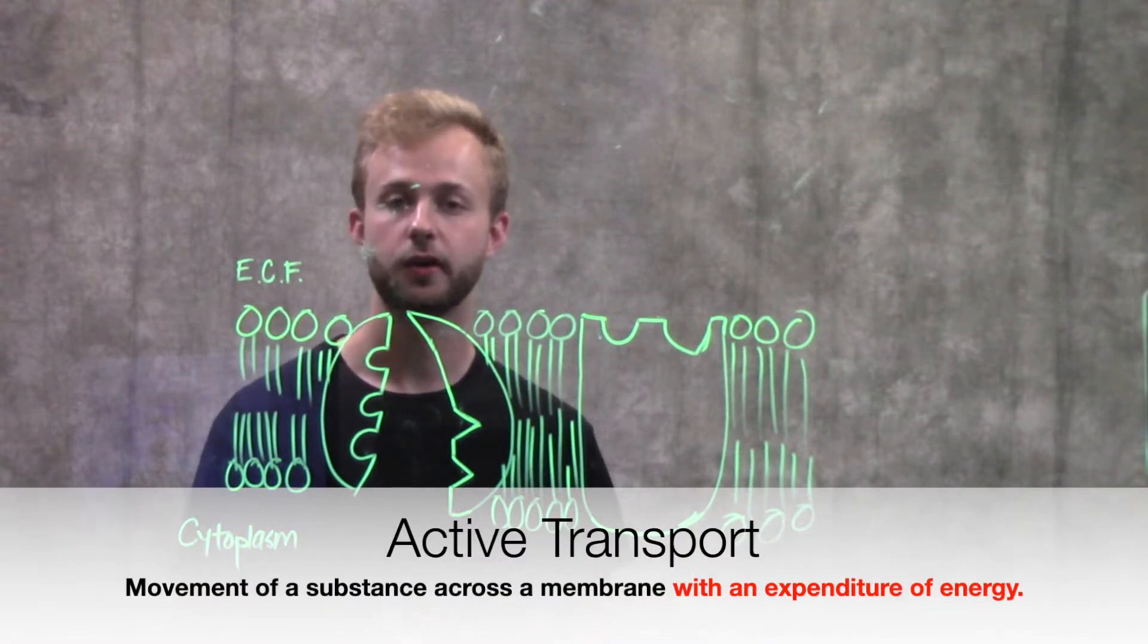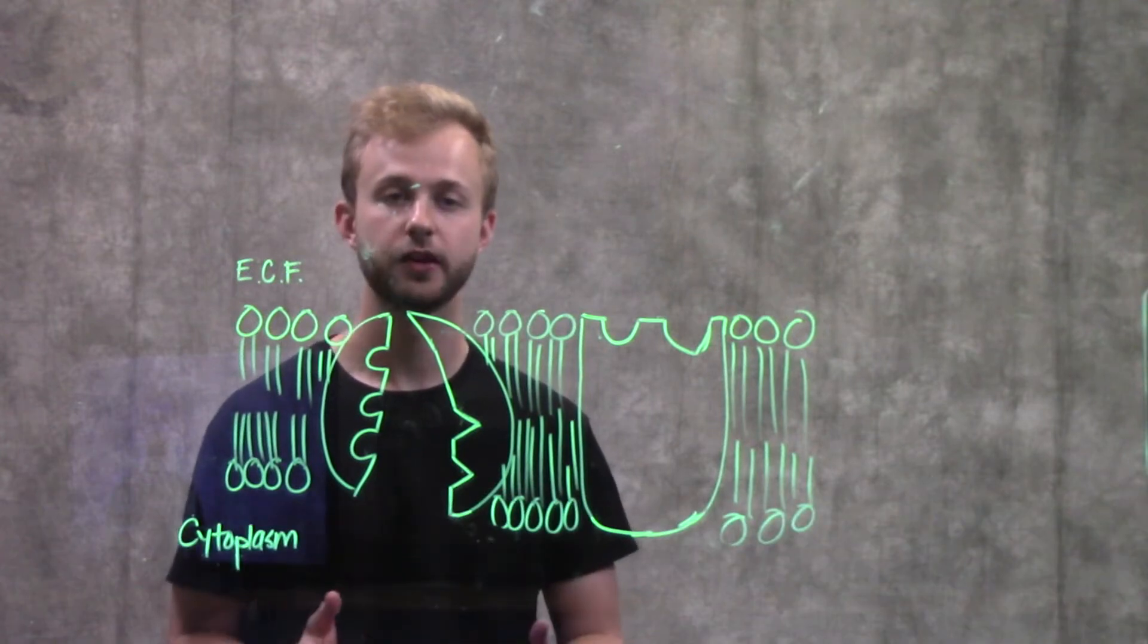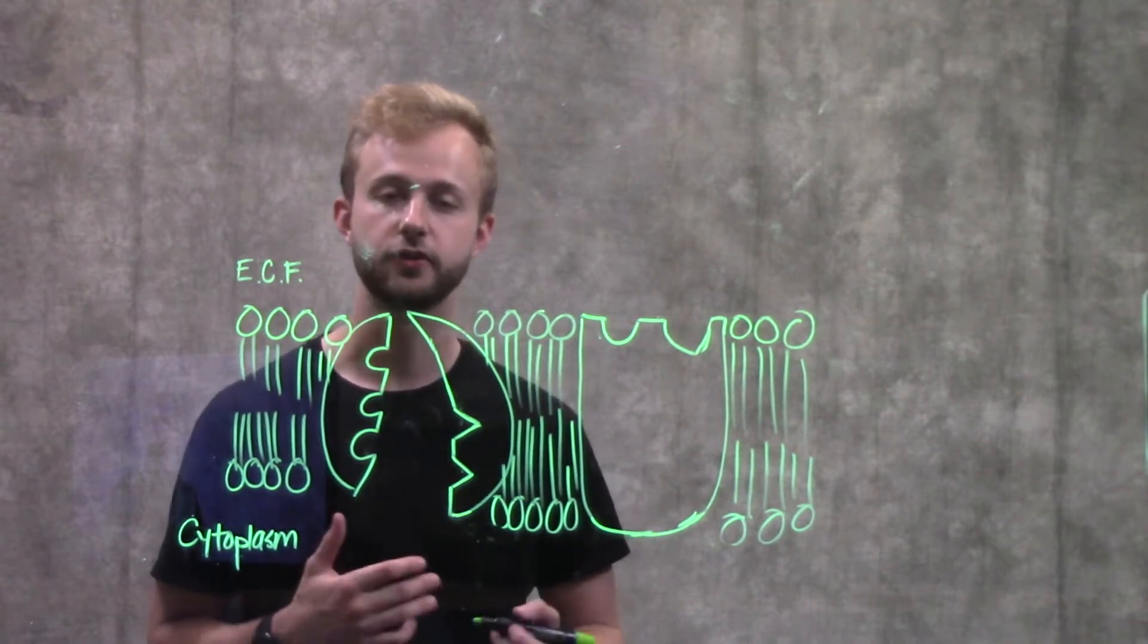Active transport, on the other hand, does require that the cell use some of its energy in the form of ATP because now we're going to be pumping things against their concentration gradients. So we have two kinds of active transport that we're going to talk about.